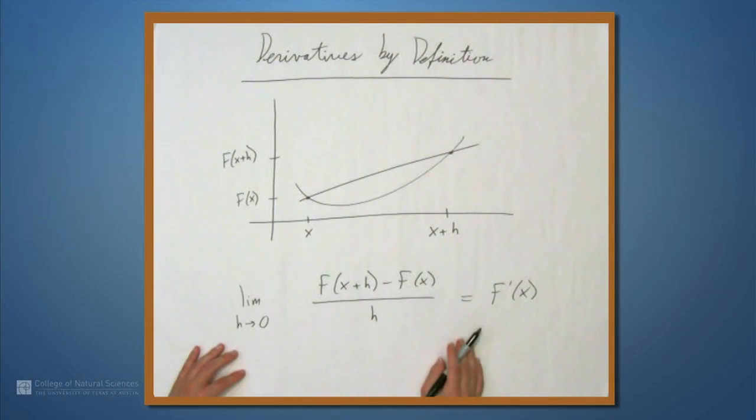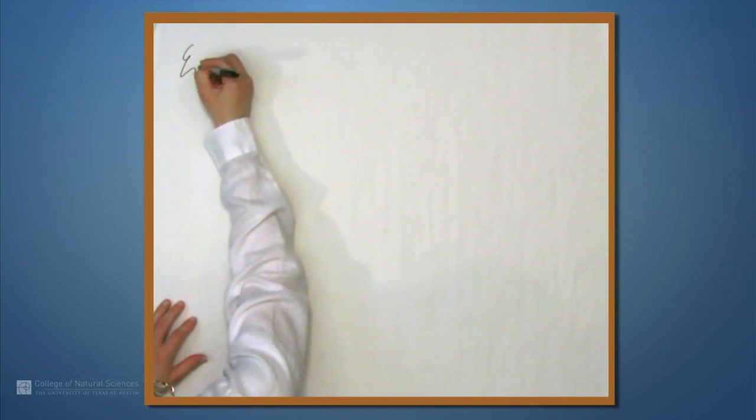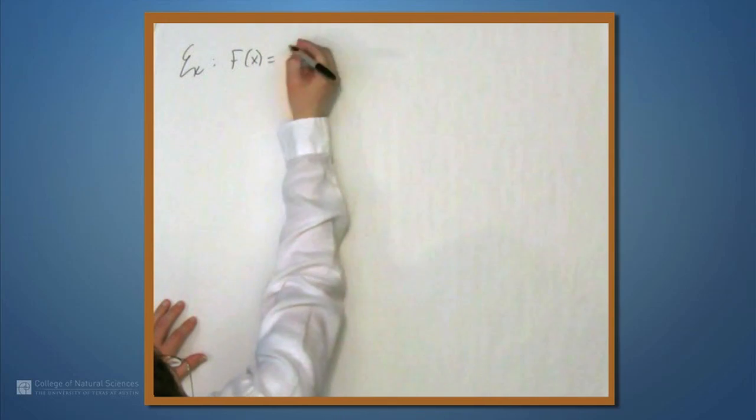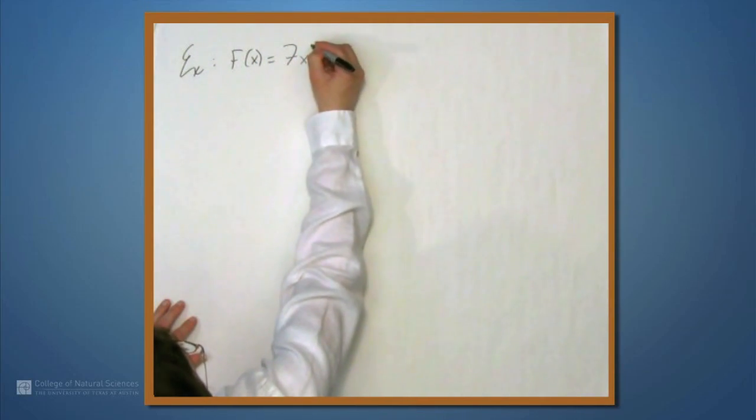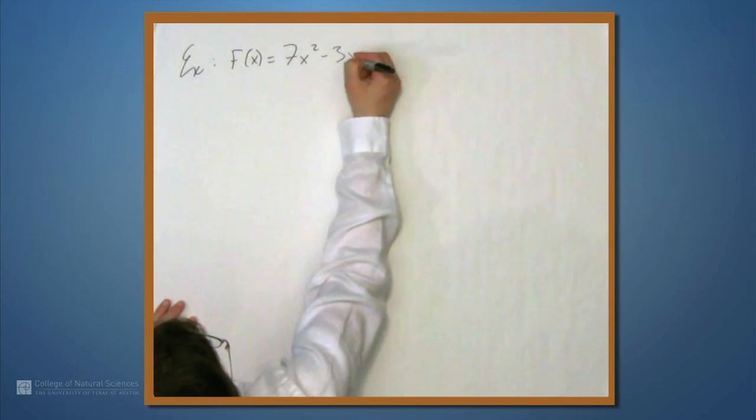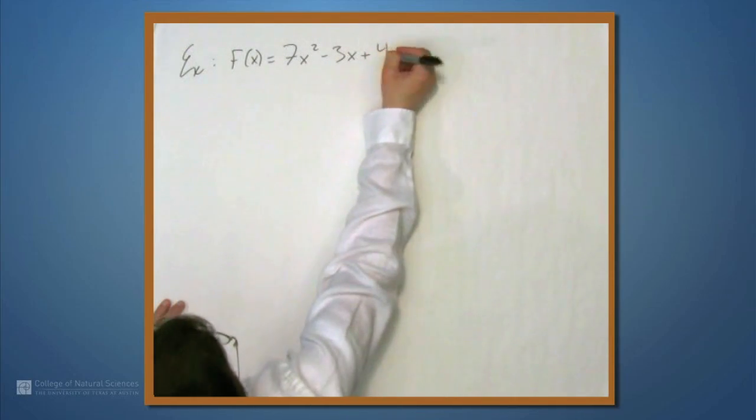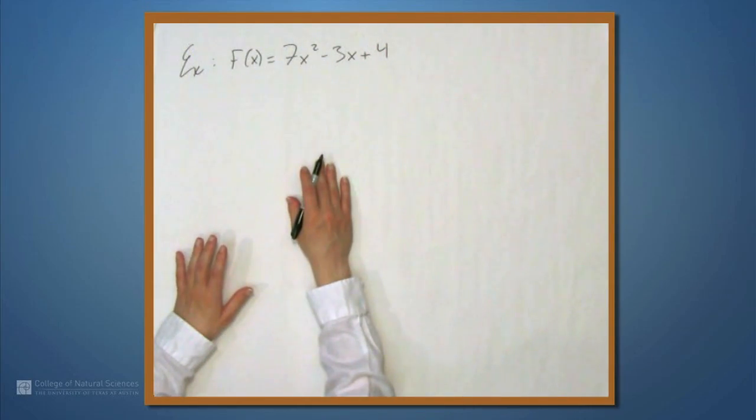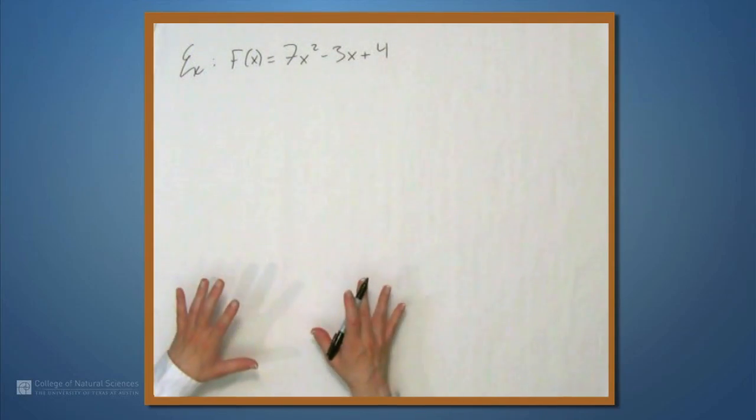We're going to use this definition to compute a derivative. Example: let's set f equal to 7x squared minus 3x plus 4. First thing I want to do is find the difference quotient, because that involves a lot of algebra, and I want to get that over with before I even start talking about limits.